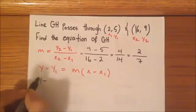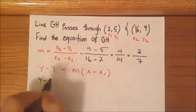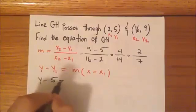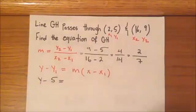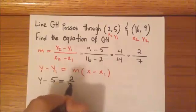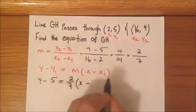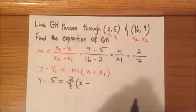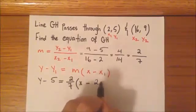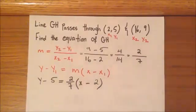So, y minus our y1 is 5 equals our slope is 2 over 7 times x minus our x1 is 2.